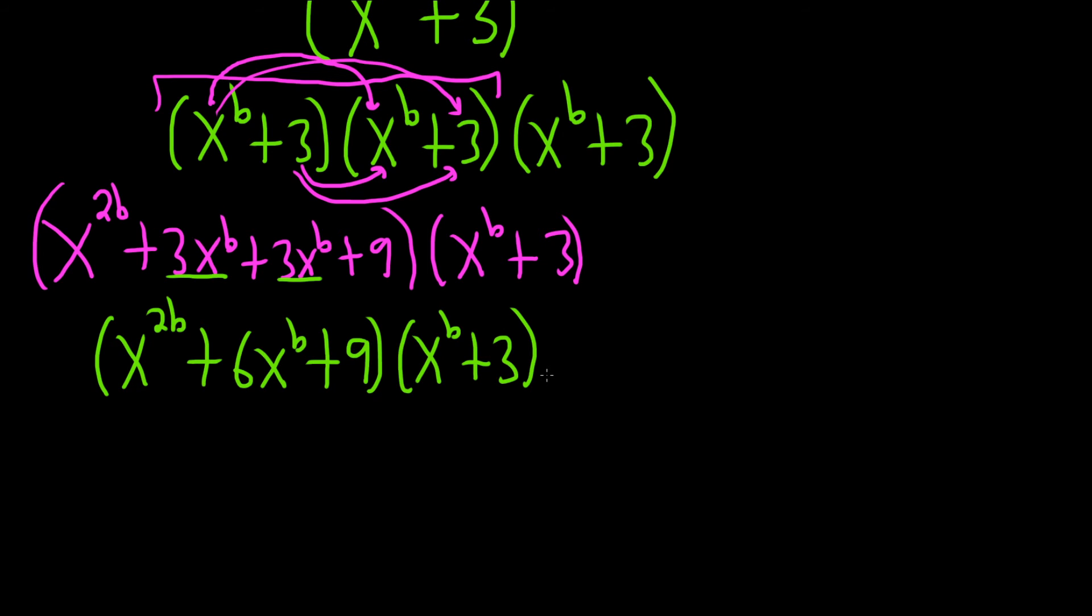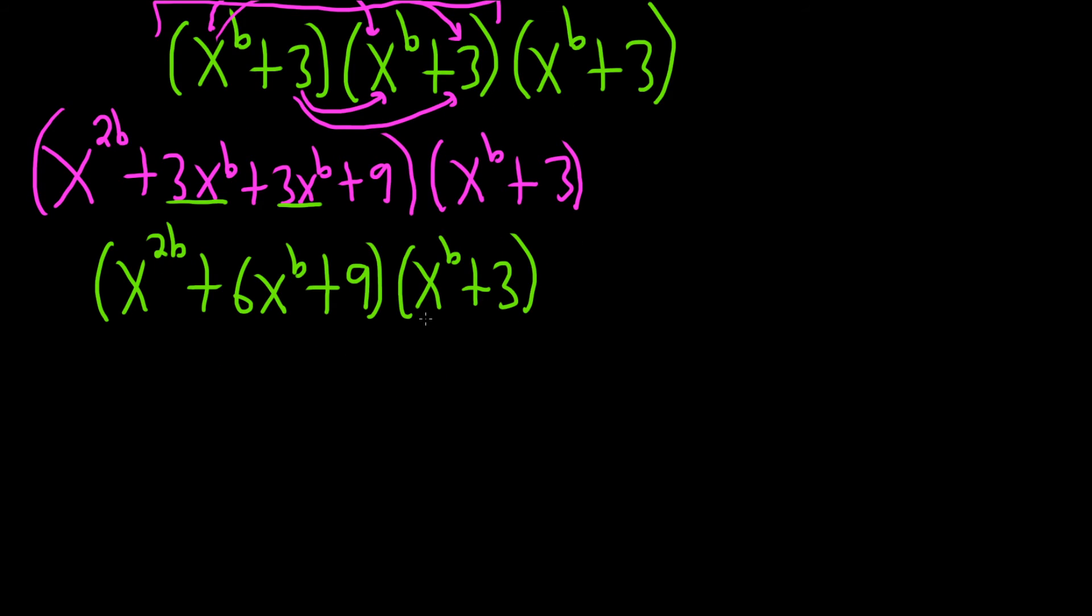All right, now we're going to distribute again. So we're going to take the x to the 2b and multiply it by both of these and then do the same thing with the other terms.